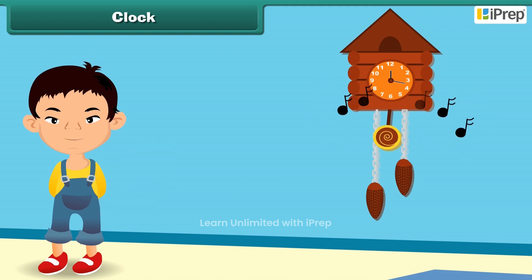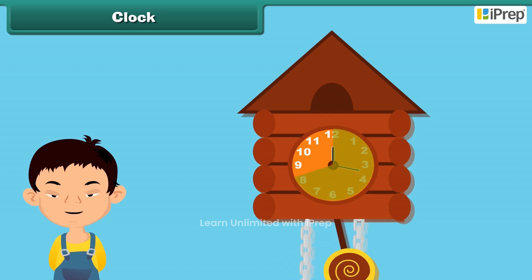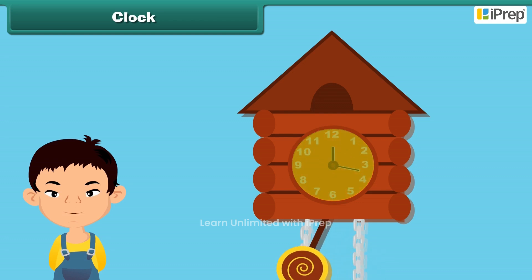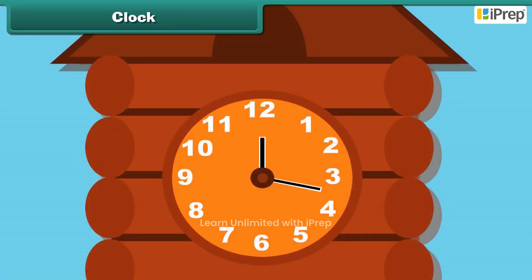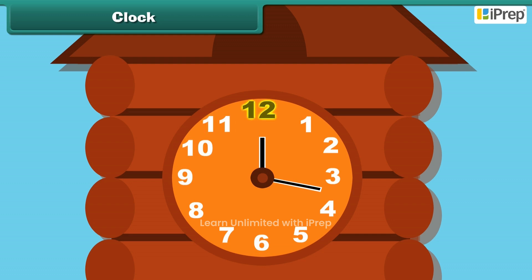The clock tells us the time. There are 12 equal divisions in a clock, named as 1, 2, 3, 4, 5, 6, 7, 8, 9, 10, 11, and 12. The clock has two hands.